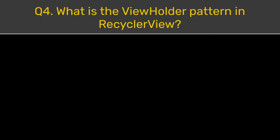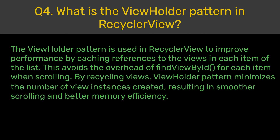Question 4. What is the ViewHolder pattern in RecyclerView? The ViewHolder pattern is used in RecyclerView to improve performance by caching references to the views in each item of the list. This avoids the overhead of findViewById for each item when scrolling. By recycling views, the ViewHolder pattern minimizes the number of view instances created, resulting in smoother scrolling and better memory efficiency.